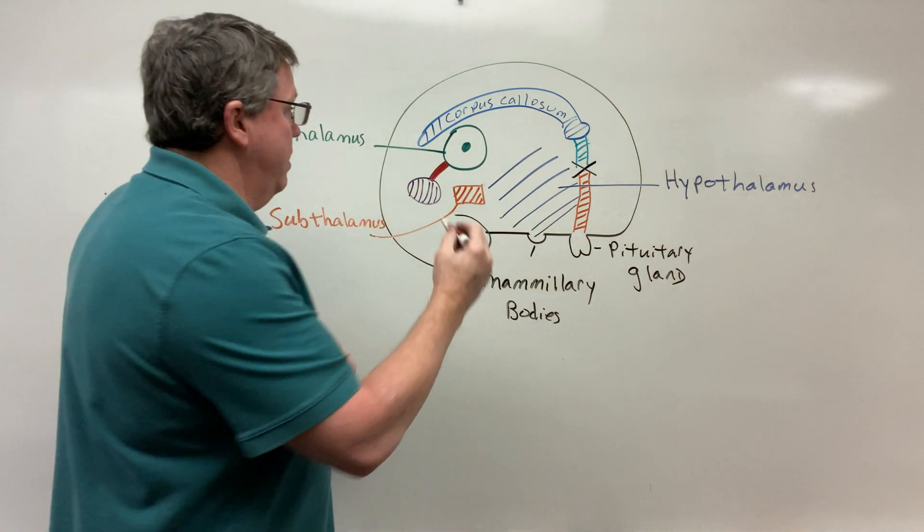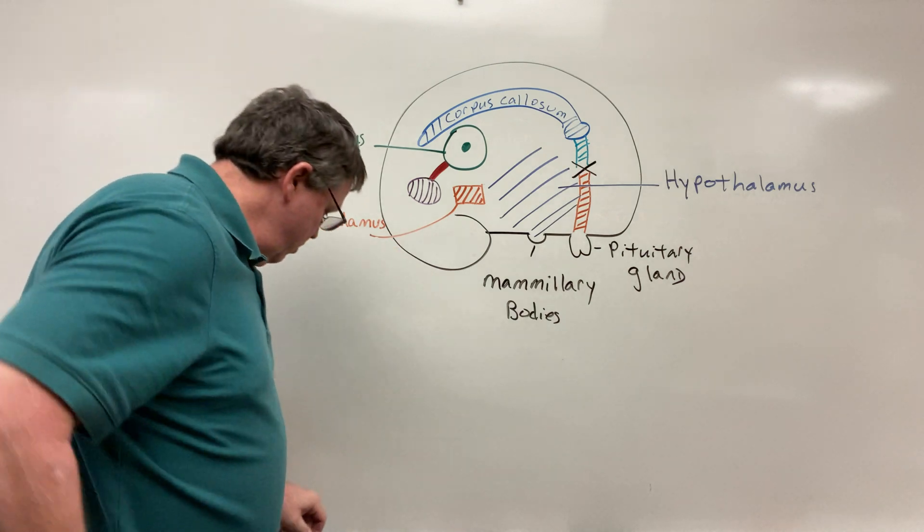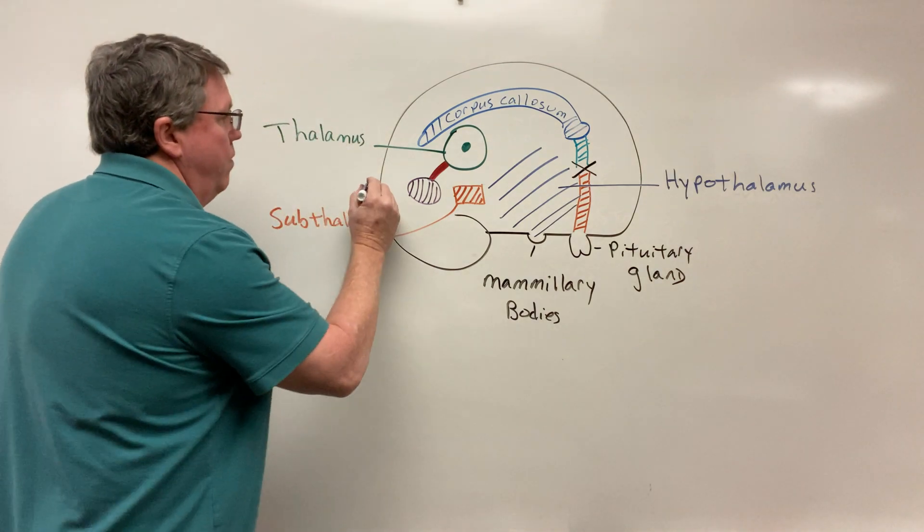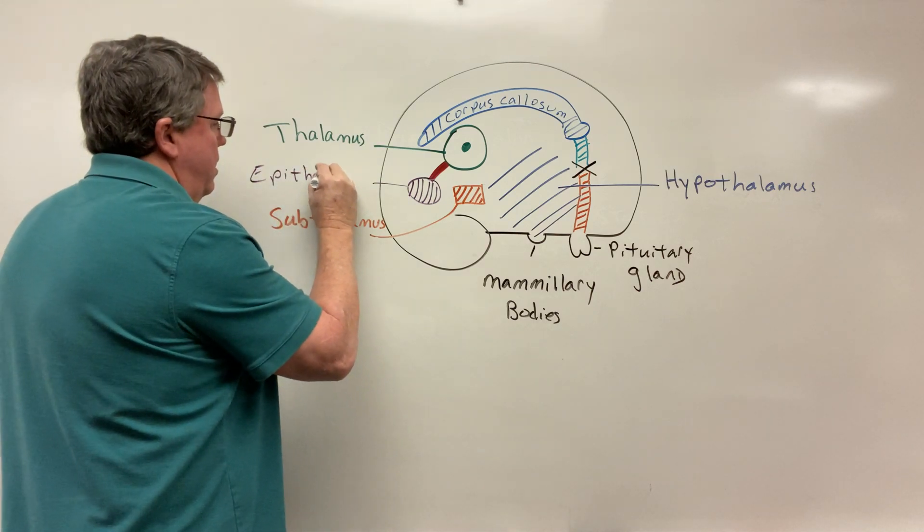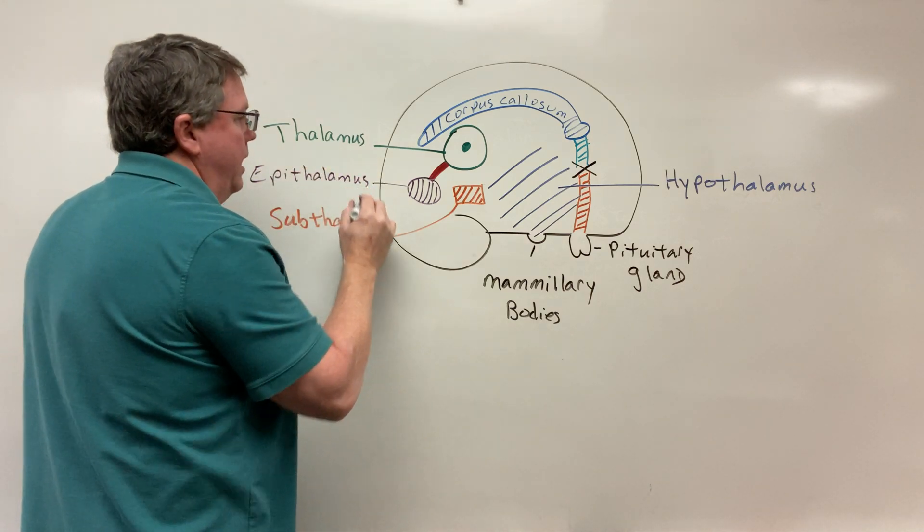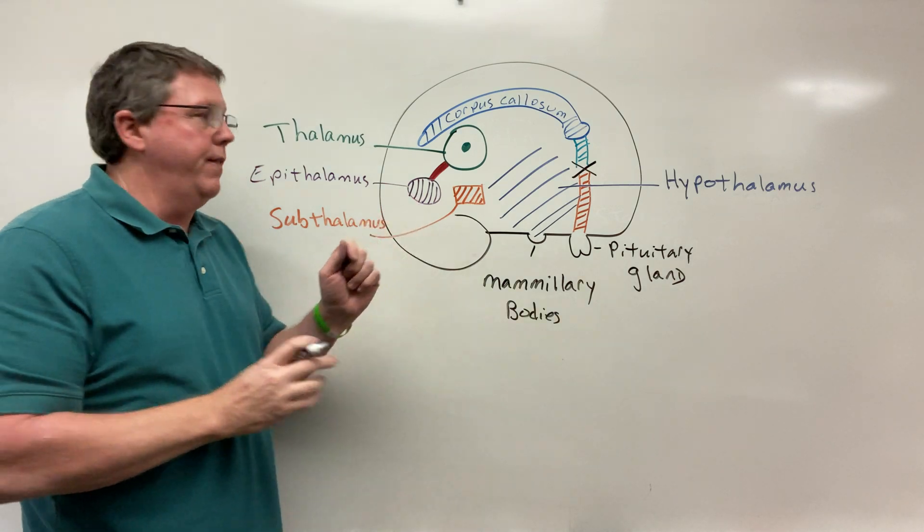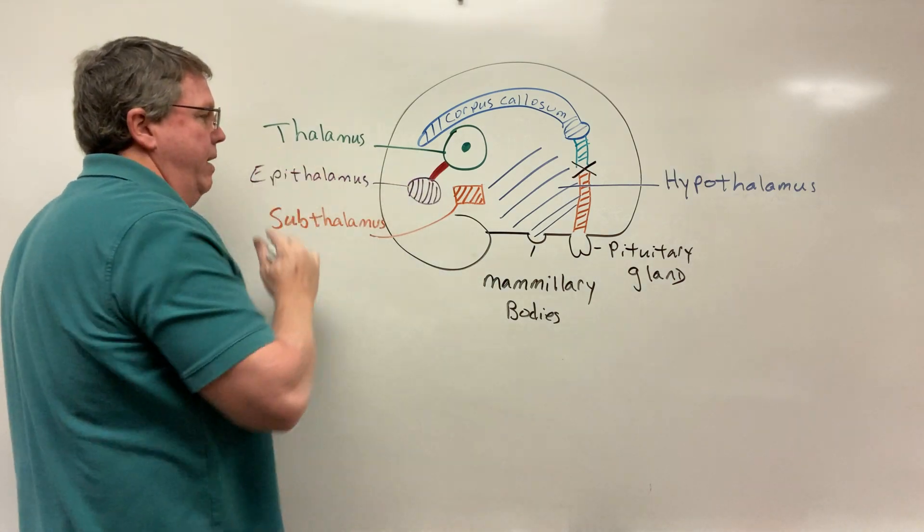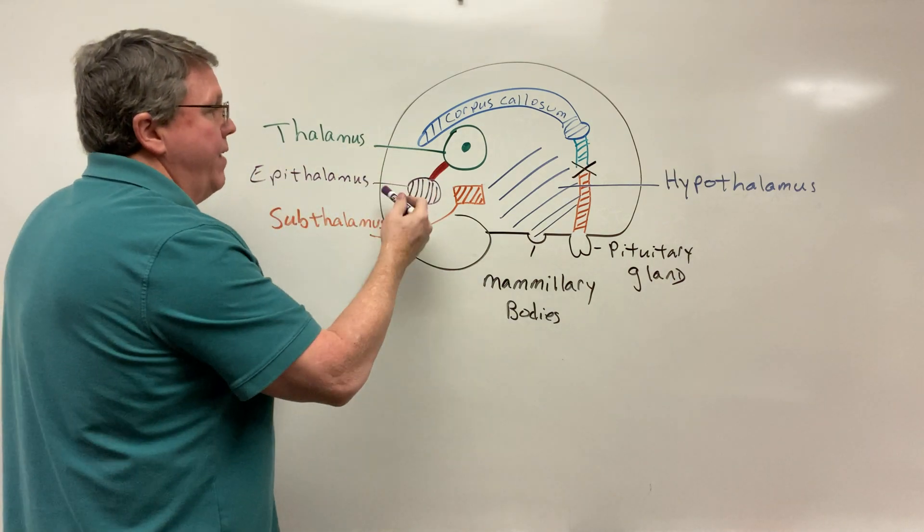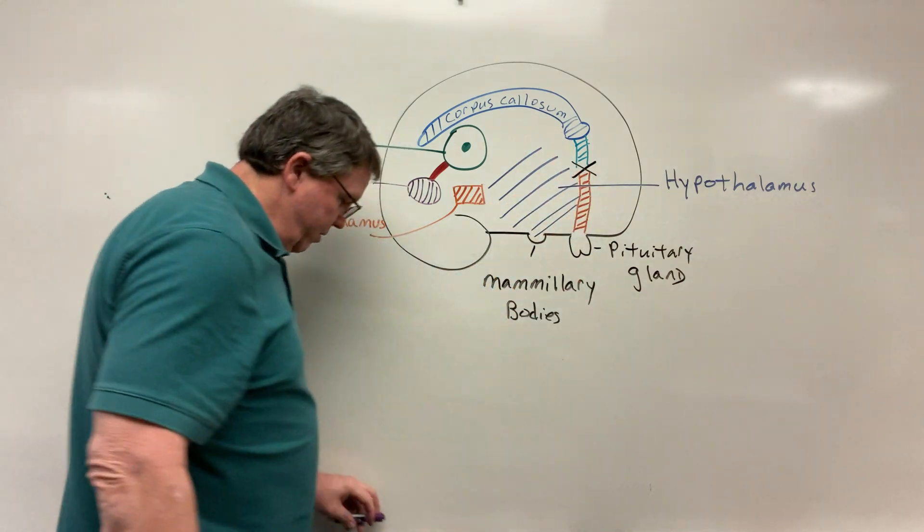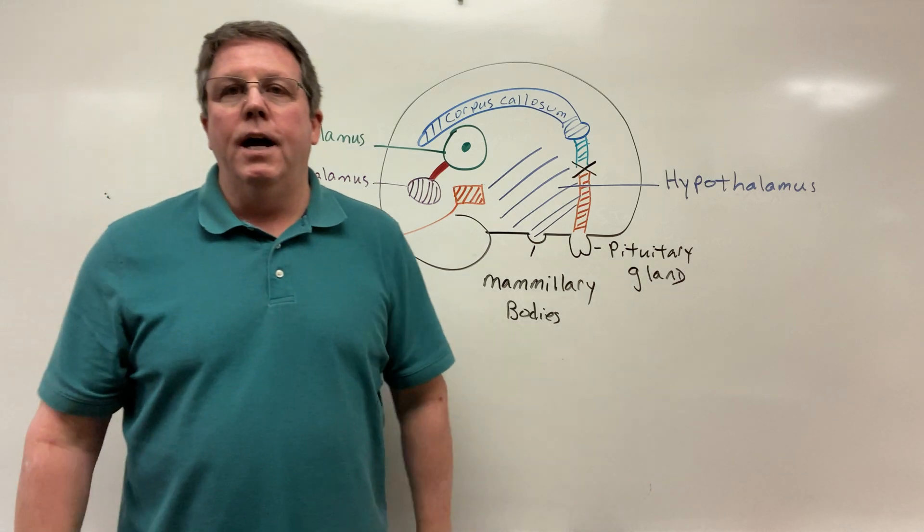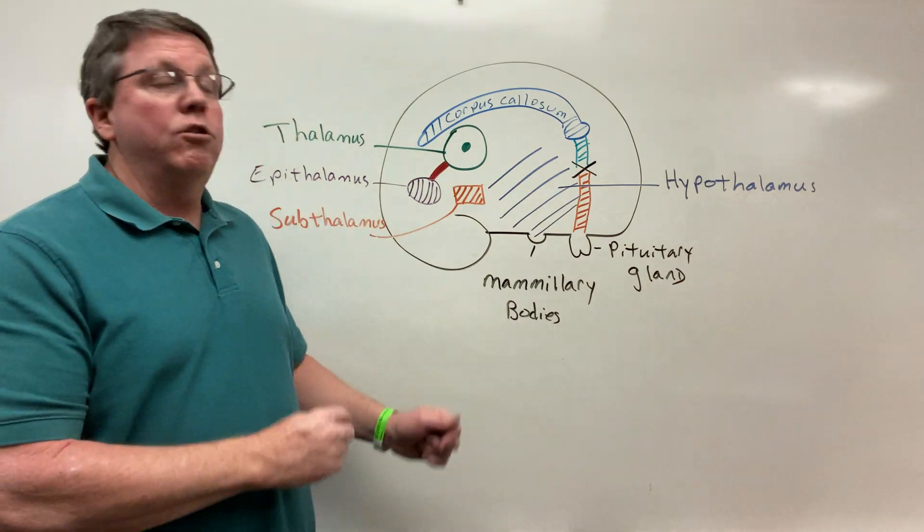So the diencephalon is made up of the epithalamus - the pineal gland makes up a large part of the epithalamus - the thalamus, the subthalamus, and the hypothalamus. That's what makes up the diencephalon. Thank you so much for watching.